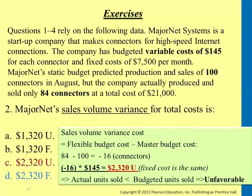So it would be minus 16 times 145 plus 700. This should be unfavorable, $2,320.